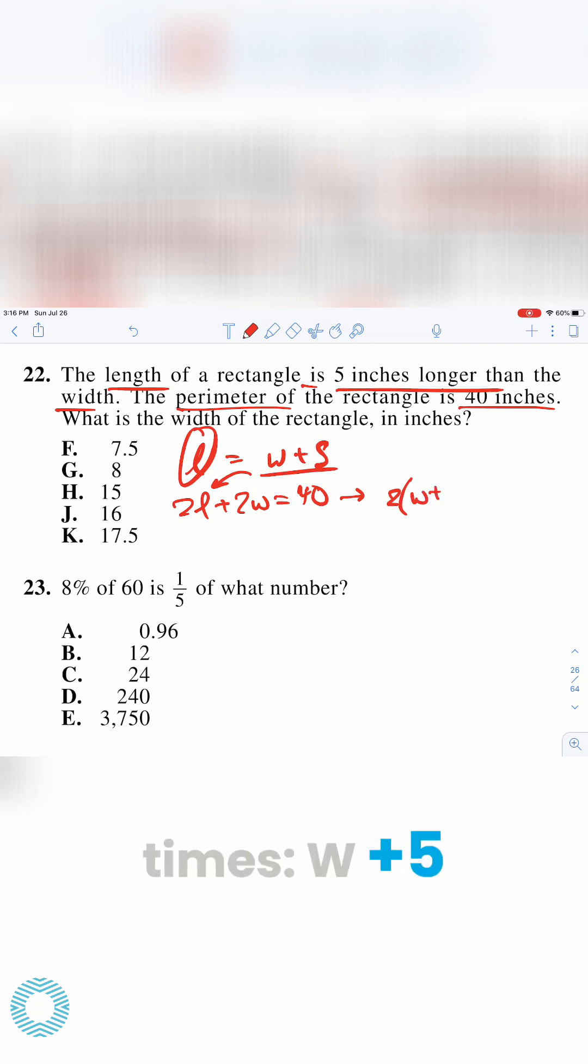2 times W plus 5 plus 2W equals 40. So now we can solve this equation for W. So 2W plus 10 plus 2W equals 40.